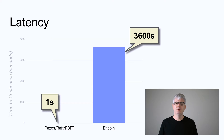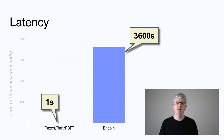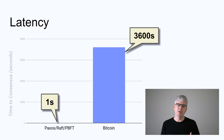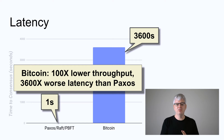Assuming your data makes it into a block that gets mined, you're still not done. You can't return to the application and say your data is durable, because that block might have been mined on a fork or branch in the blockchain. So you need to wait some more time to see if you're on a branch or actually on the main blockchain. Typically, the advice people give is you need to wait at least an hour. Comparing the two systems: Bitcoin has 100 times lower throughput than Paxos, and 3,600 times longer latency. That's terrible.